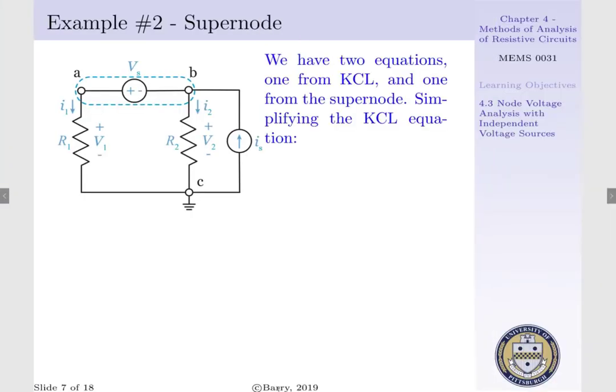We have two equations, one of which came from our KCL equation at the supernode, and the other from the supernode itself, such that Vs was equal to Va less Vb.